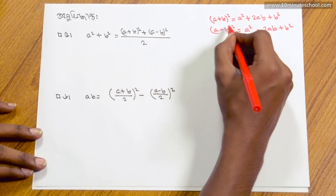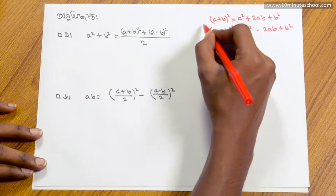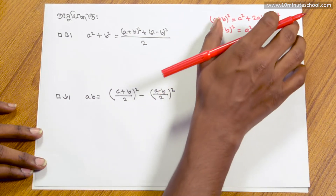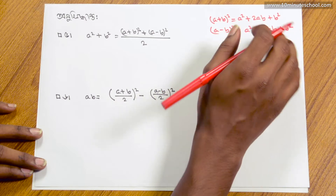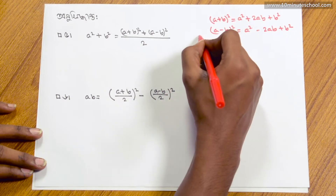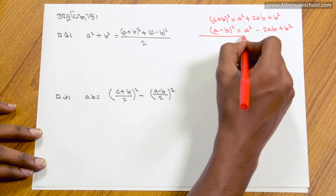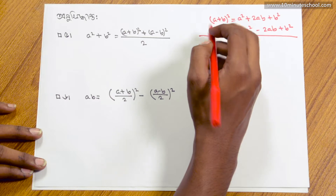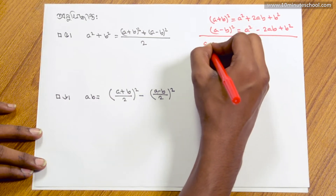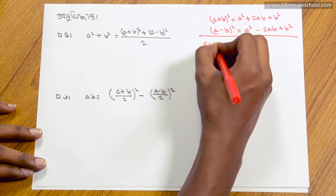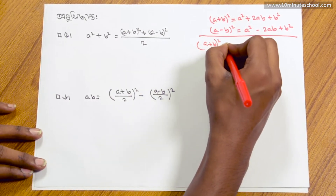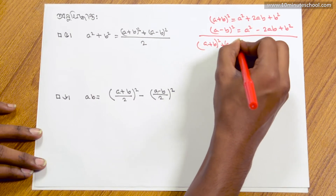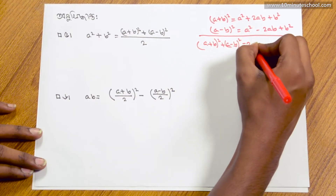Let's start here. The first two are: (a plus b) whole square and (a minus b) whole square equal to a square.